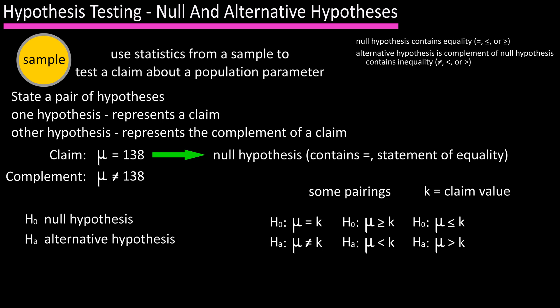In number three we have for H sub zero, mu less than or equal to k, and for H sub a, mu greater than k. As you can see in each of these, the statement of equality is in the null hypothesis H sub zero, and the inequality is in the alternative hypothesis H sub a.